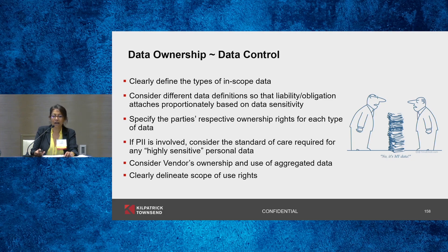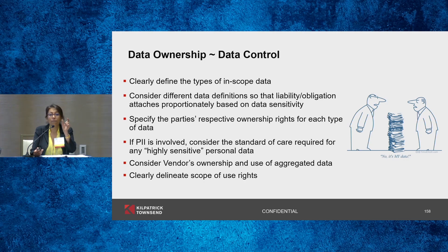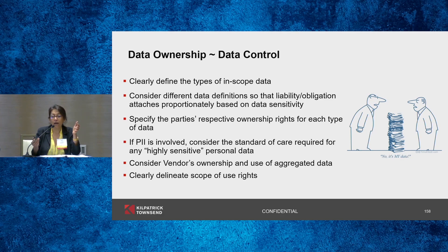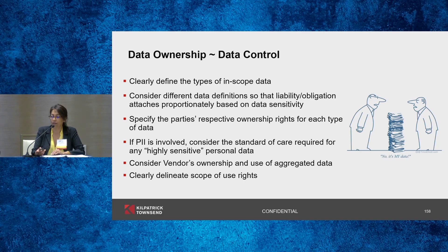Given the importance of data ownership and the ability to control data, here are some best practices. It's really important to define and understand upfront what types of data will be inputs and outputs. Consider defining separate buckets of customer data and applying different liabilities and obligations to each. For example, you might want to define personal data separately from routine customer data and have the personal data be subject to a DPA — a data processing agreement. Once you've defined the data, it's really important to define the use rights, which is what Jeff will get into.